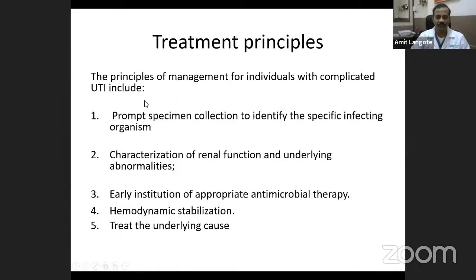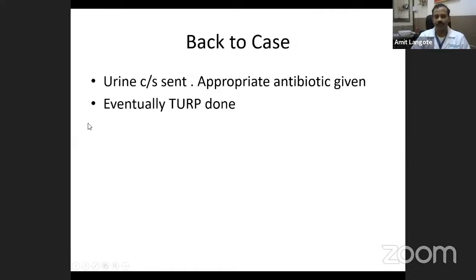The principles of treatment for complicated UTI are: promptly collect a sample, identify the species, and get a sensitivity. Characterize renal function and the underlying abnormality. Institute appropriate therapy and hemodynamic stabilization as required. Most importantly, also treat the underlying cause that led to infection. In our case, we gave an appropriate antibiotic, but eventually this patient also needed TURP for the prostate, after which he did not have more infections in the future.